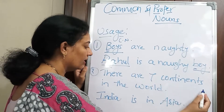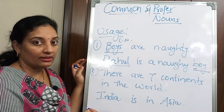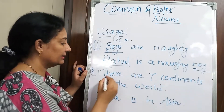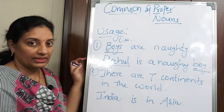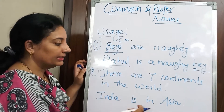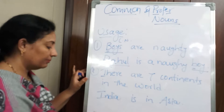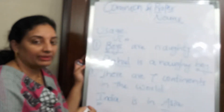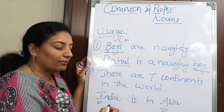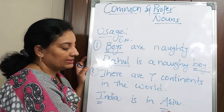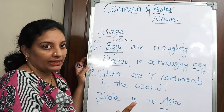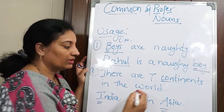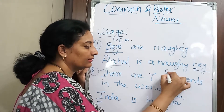Look at the second example: 'There are seven continents in the world.' Here we have no capital letters except at the beginning of the sentence. Now compare: 'India is in Asia.' Here we have two capital letters — 'I' in India and 'A' in Asia — because India is the name of a country and Asia is the name of a continent. 'Continents' is not capitalized because it is a common noun, whereas 'Asia' is capitalized because it is a proper noun.